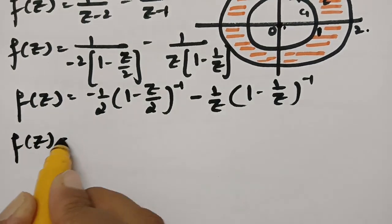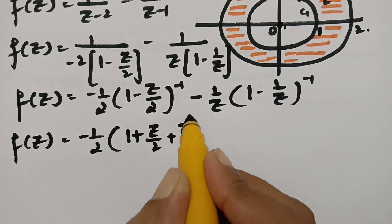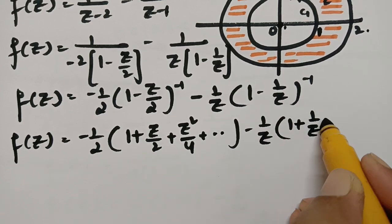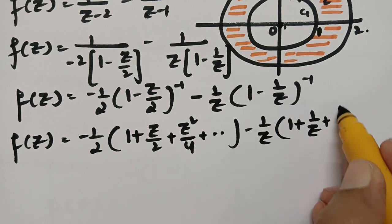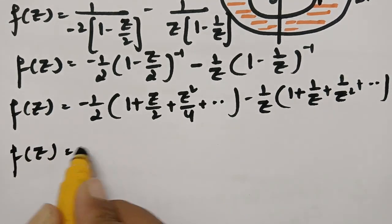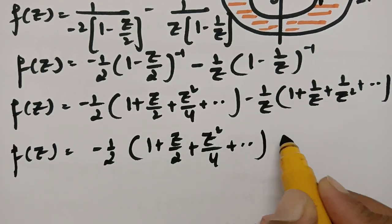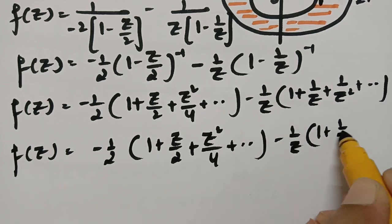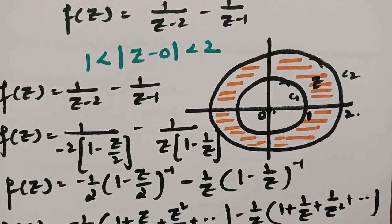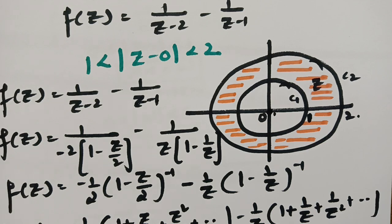Expanding: f(z) = -1/2 · (1 + z/2 + z²/4 + ...) - 1/z · (1 + 1/z + 1/z² + ...). This is the final answer for the region 1 < |z| < 2. We build the concentric circles, check that f is analytic within and on both circles, take the appropriate common factor, and expand.